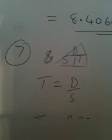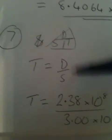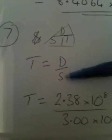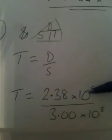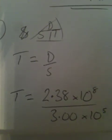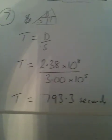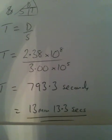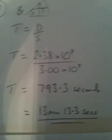Number 7 is basically a distance divided by speed question. We have a distance of 2.3 × 10⁸ and a speed of 3.00 × 10⁵. Typing this into the calculator and pressing the answer button gives 793.3 seconds. And if you want to convert that into minutes, that's 13 minutes and 13.3 seconds.